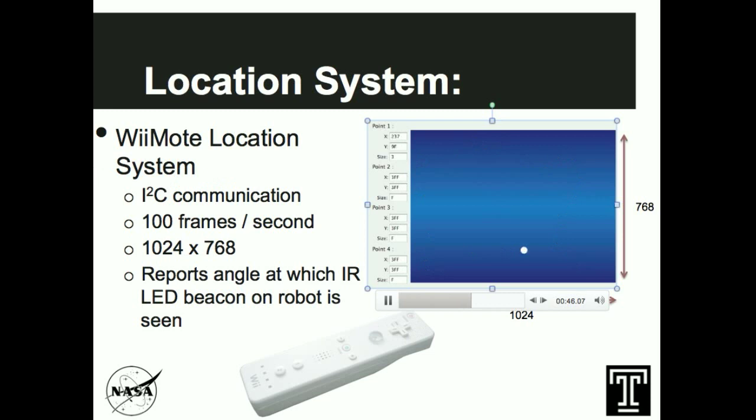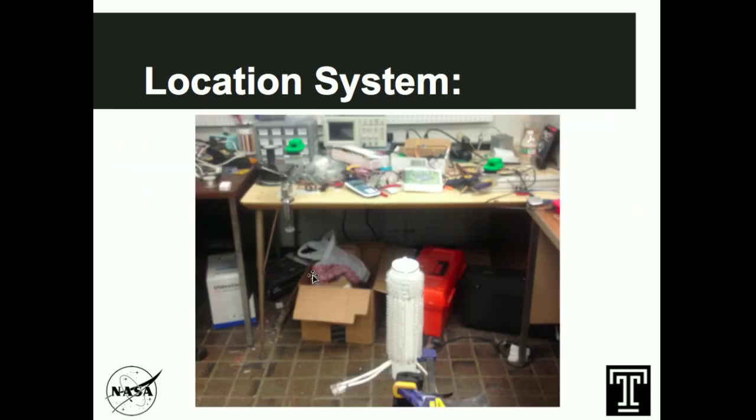This is the basic Wiimote system. What we have decided to do for our project is create an infrared beacon pole. This is the actual beacon pole that we are going to use. It has approximately 300 infrared LEDs at 940 nanometer wavelength.